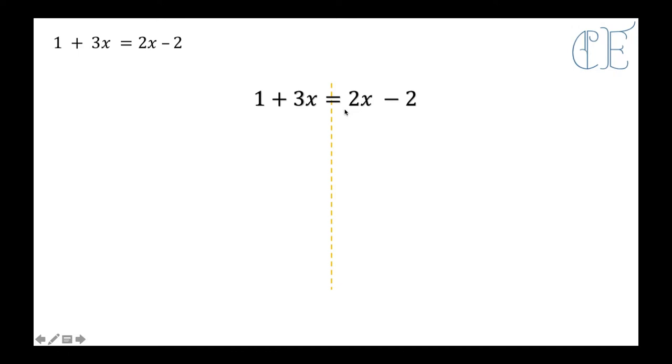Now just be careful because I can either move the 3X over here, which means I'd have to take away 3X, and 2X take away 3X is a minus X, and I don't really want a minus number. So instead, I'm going to move this 2X over to this side, which means I need to do minus 2X, and 3X minus 2X leaves me with X on its own, so it's not a minus.